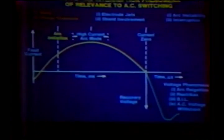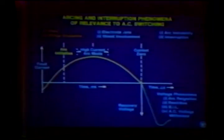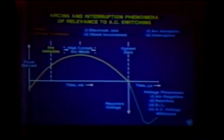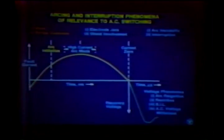At this time I would like to imagine that the fault has occurred, that this is the fault current wave, that we interrupt at current zero, and this is the recovery voltage wave. Going step by step, assuming that we've separated the contacts during the rise of that wave, let's look at the factors involved with arc initiation, with the high current arc mode, with what happens at current zero, and then the types of phenomena involved following current zero when the recovery voltage is applied across the separated contacts.